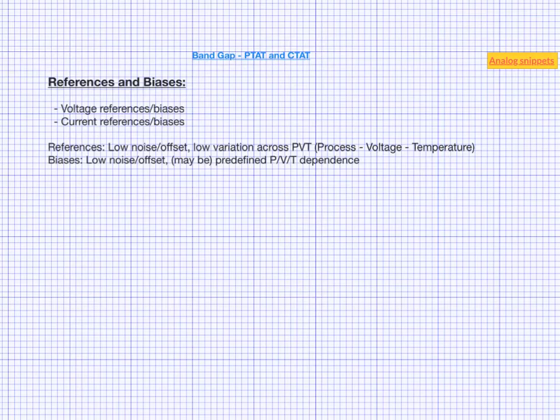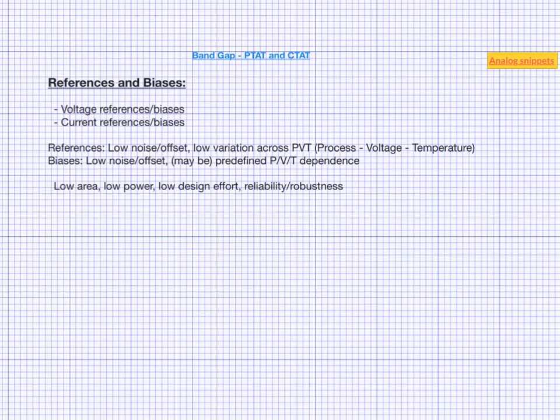And obviously, you require low area, low power, low design effort, reliability, and robustness. Although it is not uncommon to have separate circuits generating references and biases, ideally we would like to have one circuit producing both references and biases.